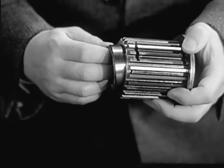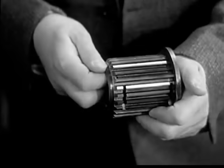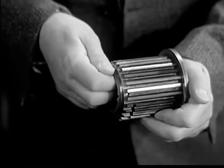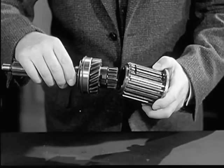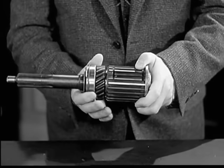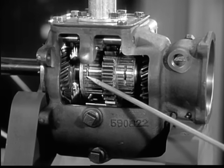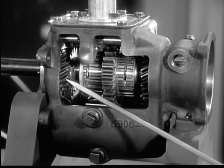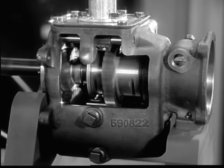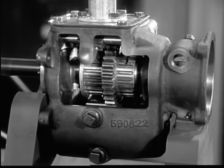When we shift into second or high, the synchronizer brings the gears to the same speed before they come together. The drums won't let the gears shift unless they are turning at the same speed. When the gears come together, there is no clash and the shift is made quietly and easily.